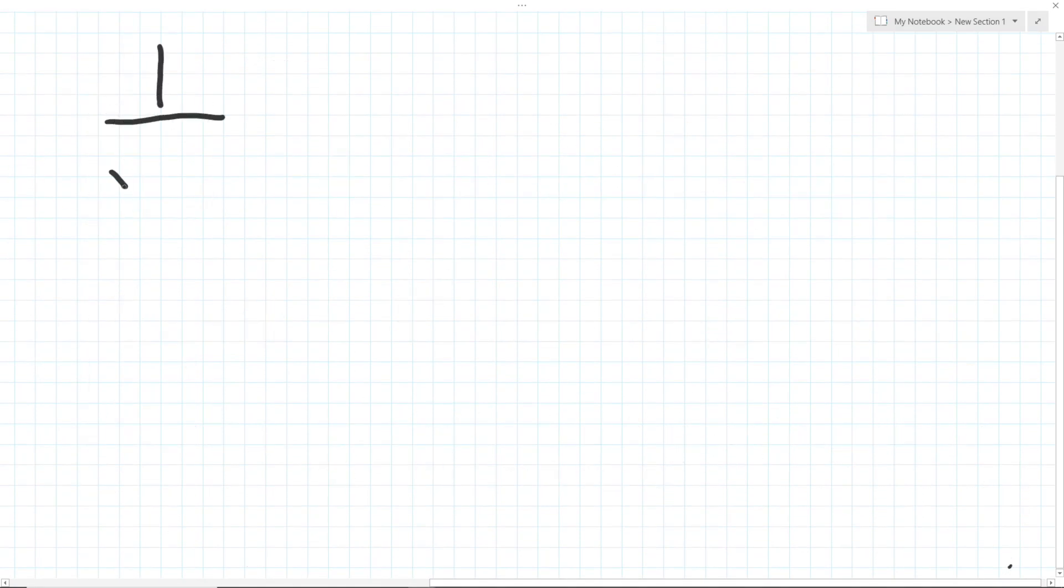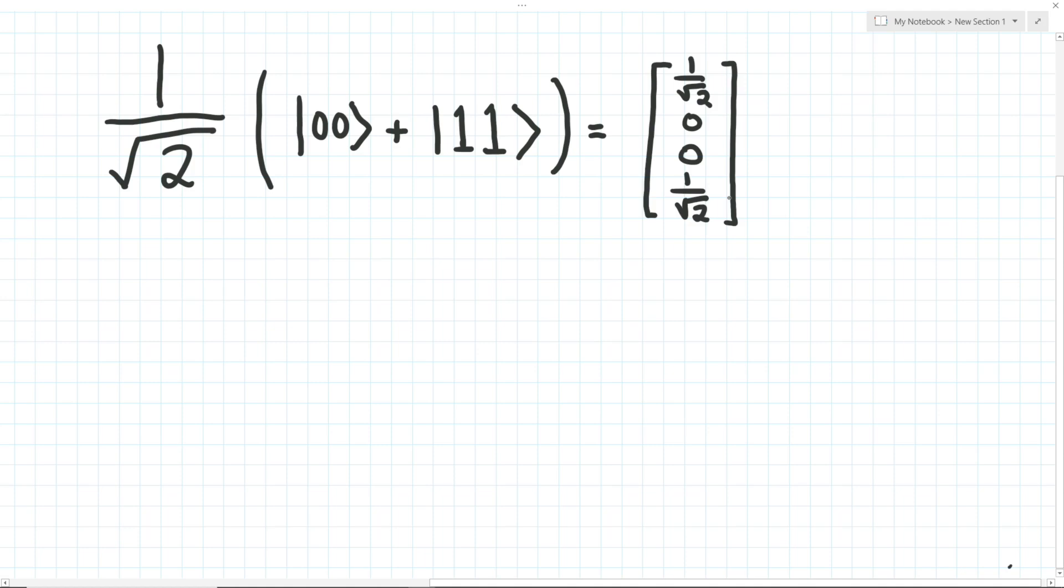Let's look at an example. Say we have a two-qubit state vector that looks like this. The amplitudes in this vector are telling us that we have an equal chance of measuring a 00 or a 11 when we measure our quantum state.